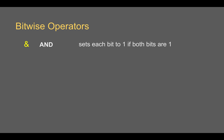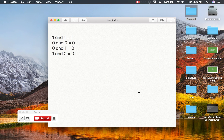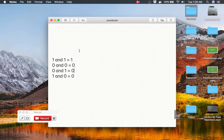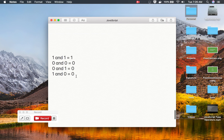To summarize: bitwise AND sets each bit to 1 only if both bits are 1. Bitwise OR sets each bit to 1 if even one of the two bits is 1. Exclusive OR sets each bit to 1 only if exactly one of the two bits is 1.